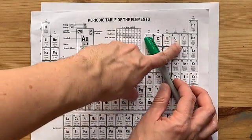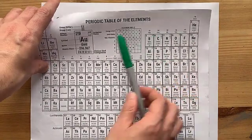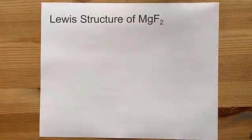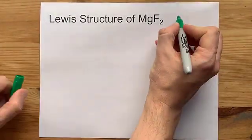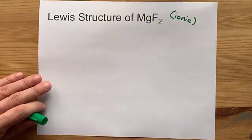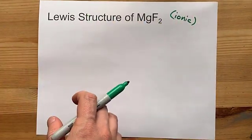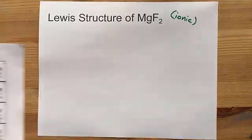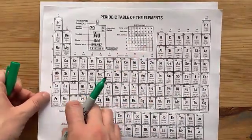Fluorine is a non-metal. It comes from the right-hand side of the periodic table. So when metals and non-metals combine, you get ionic compounds. It means the metals are going to give away their electrons, and the non-metals are going to accept those electrons. Let's see how that happens.